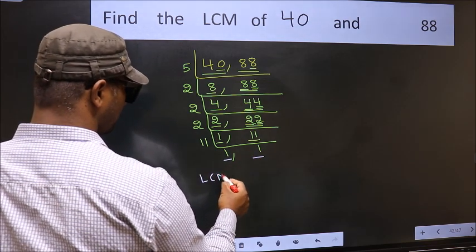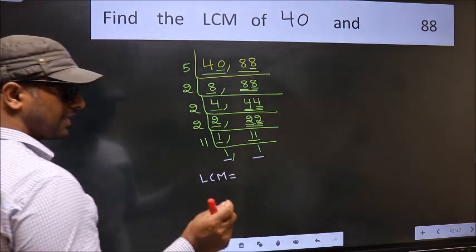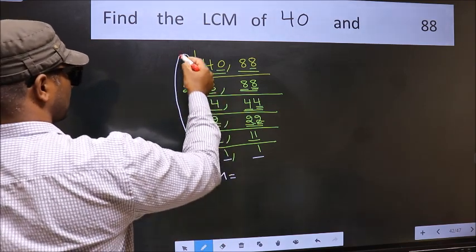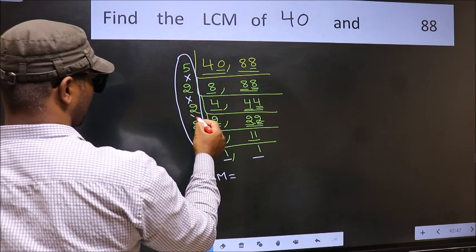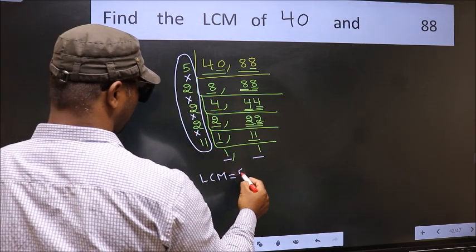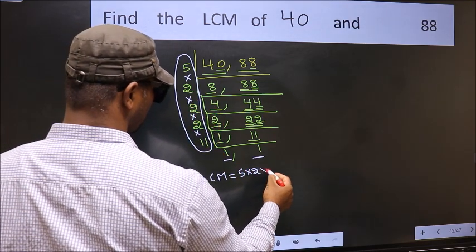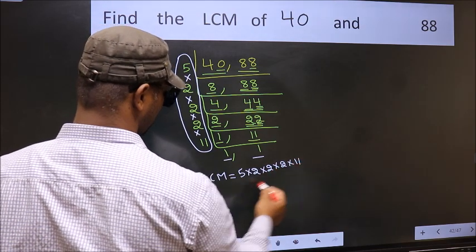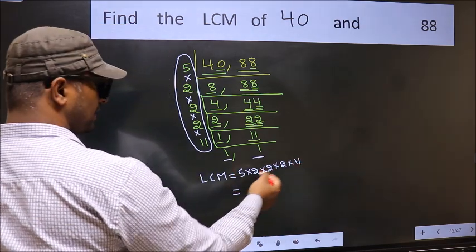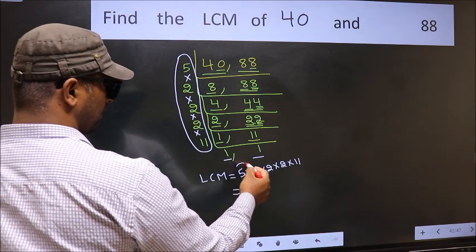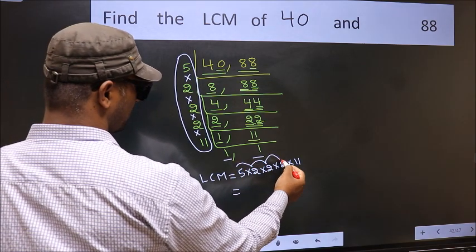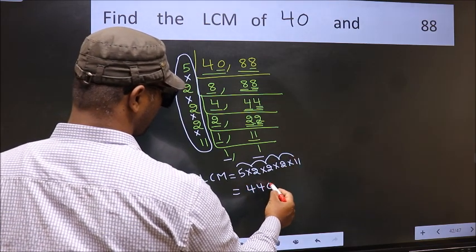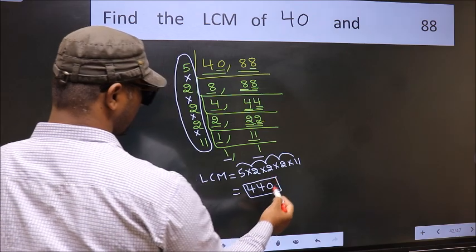So our LCM is the product of these numbers, that is 5 into 2 into 2 into 2 into 2 into 11. Let us multiply these numbers: 5 × 2 × 2 × 2 × 2 × 11 = 440. So 440 is our LCM.